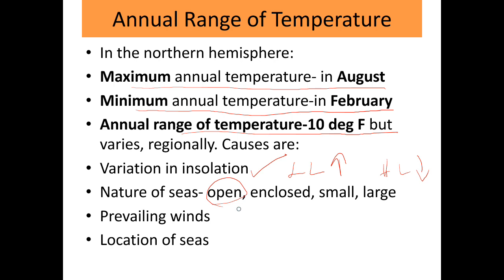In open seas, ocean currents flow in different directions — from equator to polar region and from polar region back to equator — and this affects oceanic temperature. In enclosed seas, because the sea is enclosed by land, the annual range of temperature is more. In small enclosed seas the annual range is also more, whereas in large open seas where ocean currents move continuously, the annual range of temperature is less.